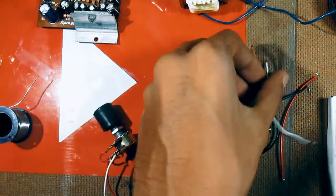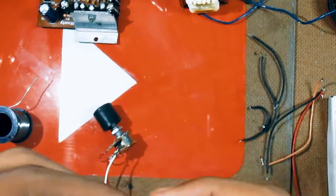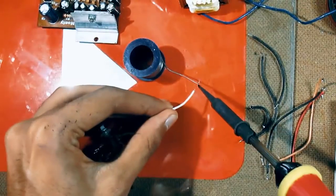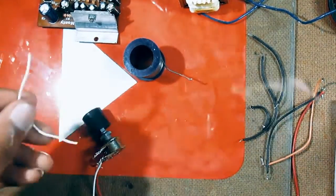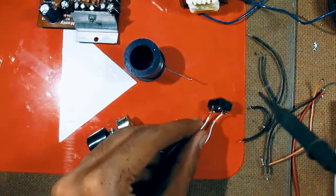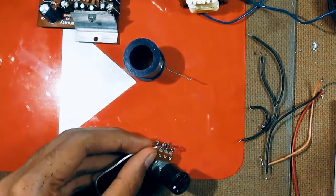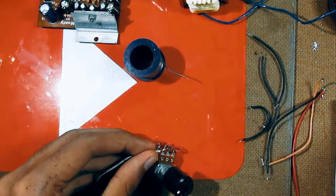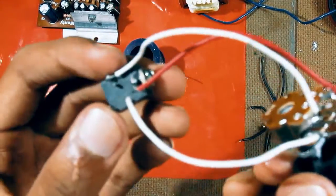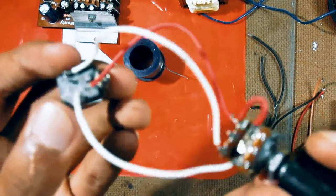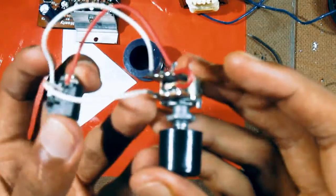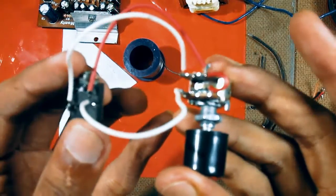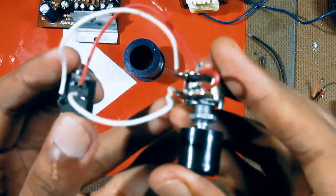Next, do the same for the other pin as well. So, this basically brings us to the end of this connection of the stereo input jack to the volume control.